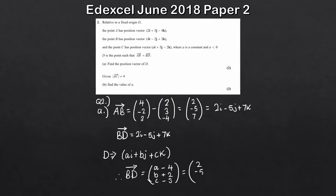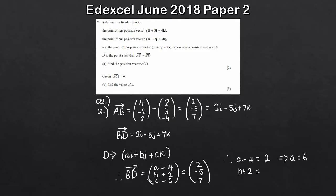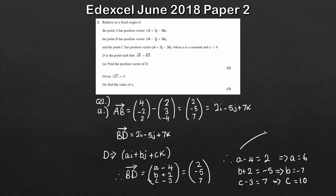So all we need to do now is solve these three linear equations, each with a single variable. A minus 4 equals 2, so A equals 6. B plus 2 equals minus 5, so B equals minus 7. And finally C minus 3 equals 7, so C equals 10. So writing out D using our three values, the position vector of D is 6i minus 7j plus 10k. That's our position vector of D, so that's part A done.